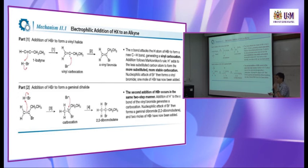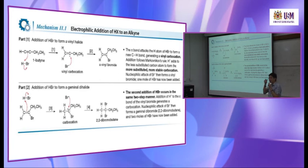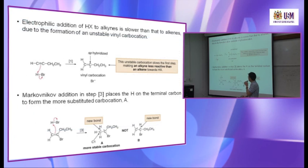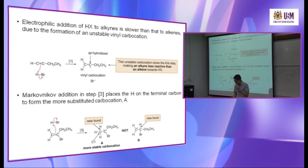This is not difficult to understand — it is only one step more compared to what you learned previously. The difference is that it involves formation of a vinyl carbocation intermediate, which is not stable. Comparing the reaction of alkyne vs. alkene with HX: alkene is faster — the reaction of alkyne is slower, less reactive with HX, due to the formation of the unstable vinyl carbocation.